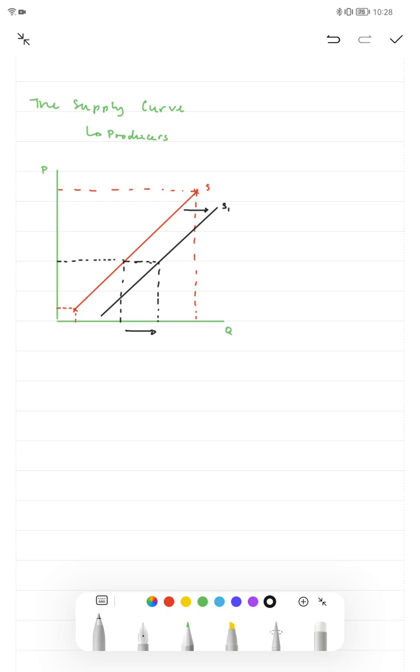So if we were to go from S to S1, that would be an increase in supply. And if we were to go from S1 to S, that would be a decrease in supply.